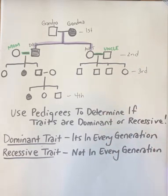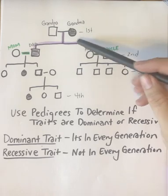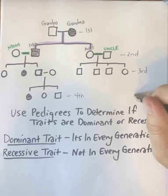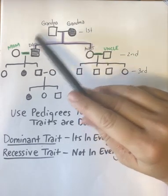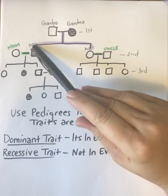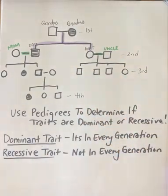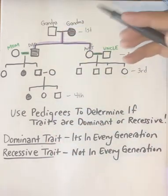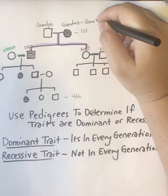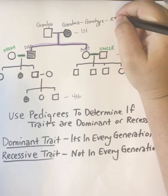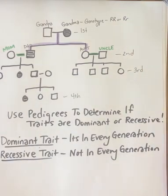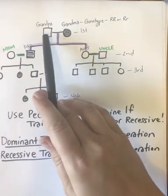The key question is: is the trait in every generation? You can also determine possible genotypes from a pedigree. Looking at grandma and grandpa, they had one child without the disease and one child with the disease. Since this is a dominant trait, grandma's genotype is either homozygous dominant or heterozygous. Grandpa doesn't have it, so his genotype would be homozygous recessive.